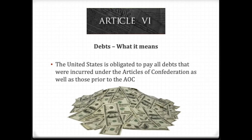In the first paragraph of Article 6, the United States recognized that the debts incurred under the Articles of Confederation truly needed to be taken care of. So they put this paragraph in so that the United States would be obligated to pay all of its debts.